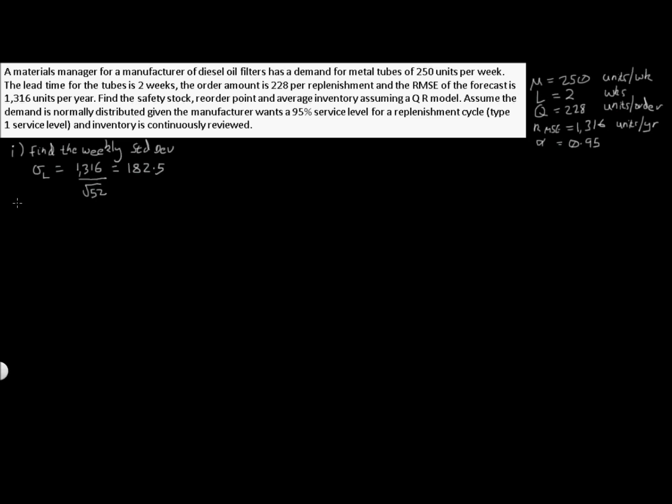Next we can go on now to find as our second step the safety stock. To find safety stock we write down some terms that we'll need to use. The first important term is lead time. Lead time we know is given as two weeks. We just calculated our sigma L which is 182.5, and alpha is 0.95.